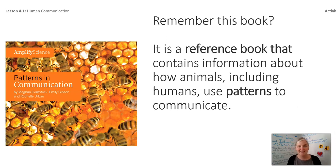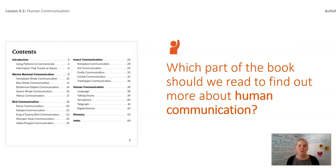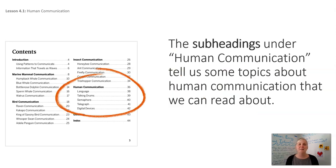Remember this book? I love this book. It was a reference book that contains information about how animals, including us humans, use patterns to communicate. This is what I'll be reading from today. Which part of the book should we read to find out more about human communication? When I'm looking at the table of contents, you're telling me right now that we should go to human communication. Remember that the subheadings, such as human communication, tell us some more topics about it.